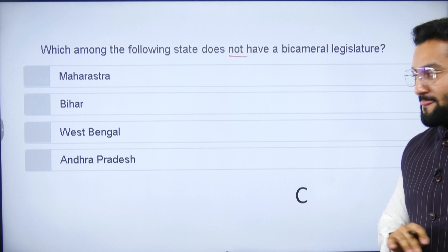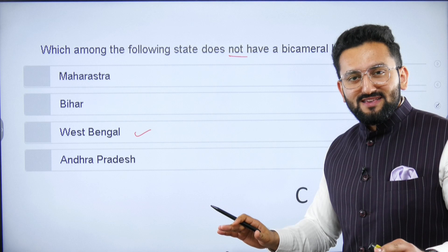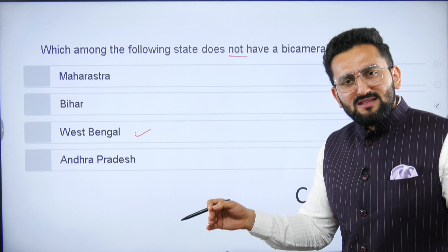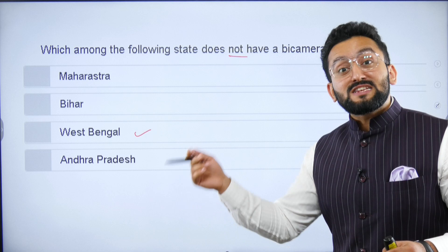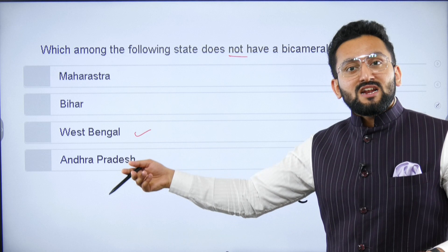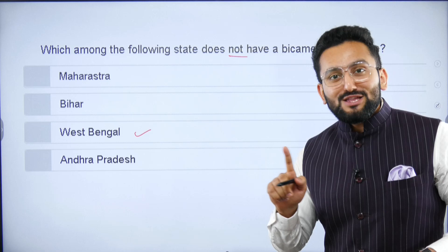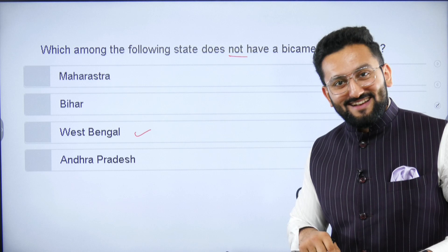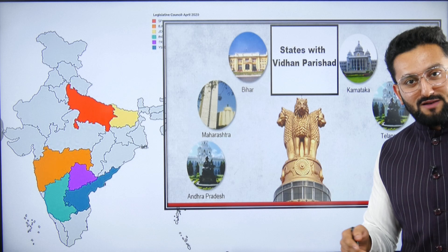For example, which state does not have a bicameral legislature? West Bengal. When UPSC asks this, it expects current affairs awareness — Mamata Banerjee, CM of West Bengal, was demanding a second house from the center. So the key points: West Bengal does not have a legislative council, and power to create one lies with Parliament.